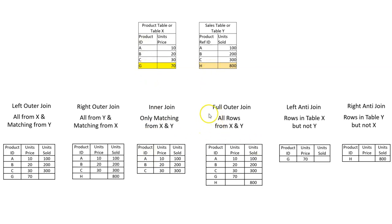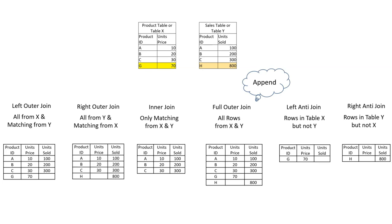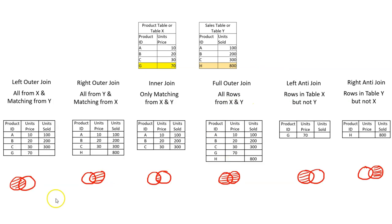Inner join includes only the rows that match between X and Y — that is only A, B, and C. There is no G or H. We have already seen full outer join. Left anti join includes rows in table X but not in Y, meaning only the rows unique to X — so only G. Right anti join includes rows unique to Y — rows in Y but not in X — so only H. The full outer join is also known as append because we are simply adding the two tables together.